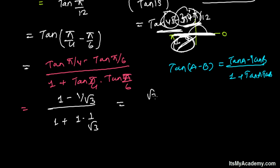Divided by 1 plus tan(π/4) that's 1, tan(π/6) that's 1/√3. If you take the LCM it's going to be (√3 - 1)/√3 times (√3 + 1)/√3. This √3 will go up, so you'll get √3 over (√3 - 1)/(√3 + 1).